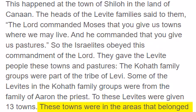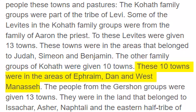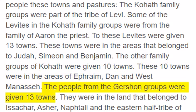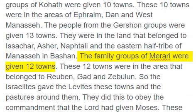These towns were in the areas that belonged to Judah, Simeon, and Benjamin. The other family groups of Kohat were given ten towns. These ten towns were in the areas of Ephraim, Dan, and West Manasseh. The people from the Gershon groups were given thirteen towns. They were in the land that belonged to Issachar, Asher, Naphtali and the eastern half-tribe of Manasseh in Bashan.